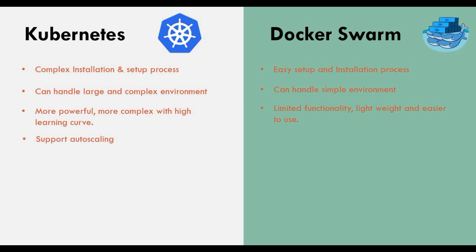Kubernetes has robust auto-scaling features like HPAs and many other options, whereas Docker Swarm requires manual scaling configuration. Kubernetes also has built-in monitoring solutions, while Docker Swarm relies on third-party tools. Kubernetes includes a graphical user interface, while Docker Swarm does not have one built in and requires third-party tools.